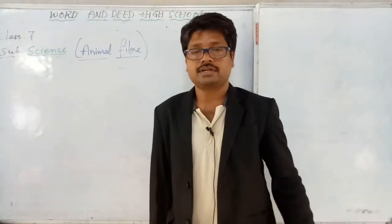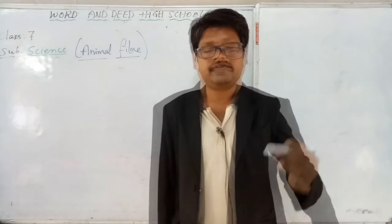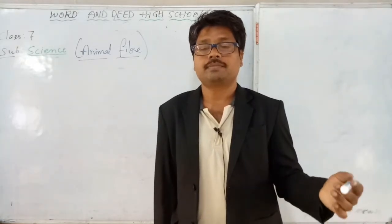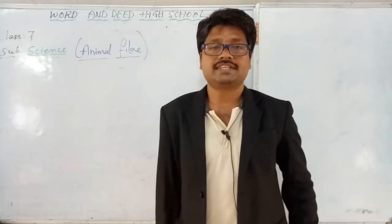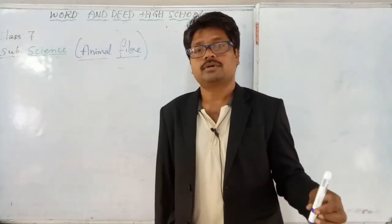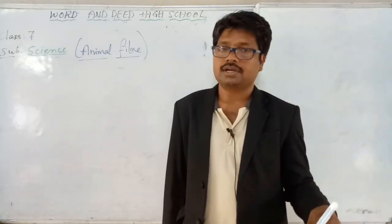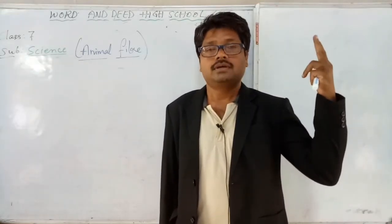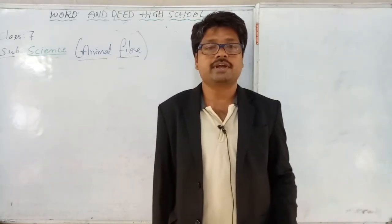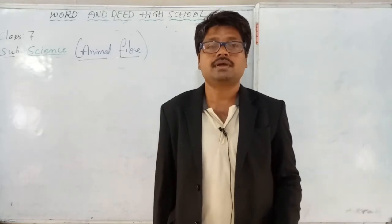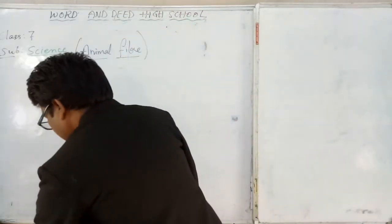Hi students, in this video I'm going to talk to seventh standard students. In the previous class, we talked about facts behind the sericulture process, the problems people face in sericulture, health issues, the length of the silk fiber produced by a single cocoon, and the average length. We also talked about things made of wool and the sources of wool, which I gave you as homework.